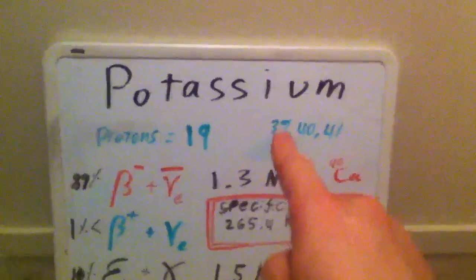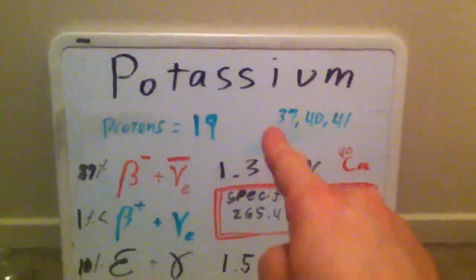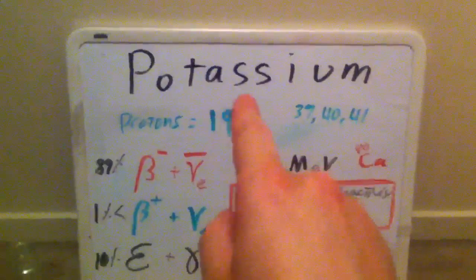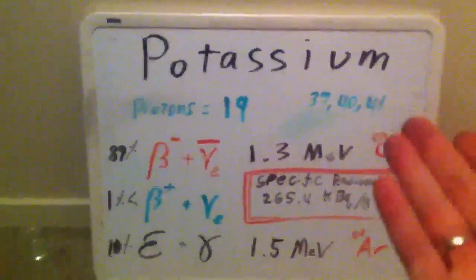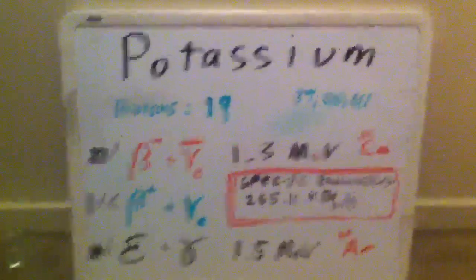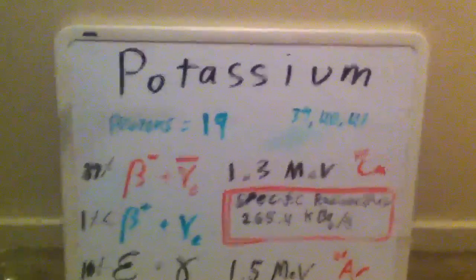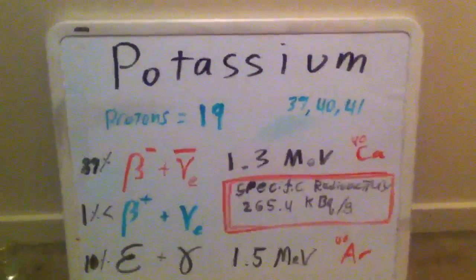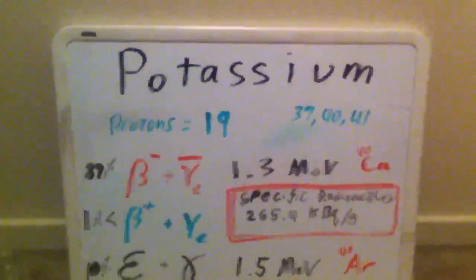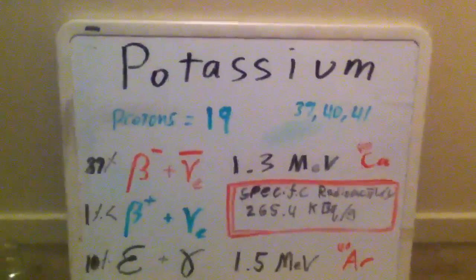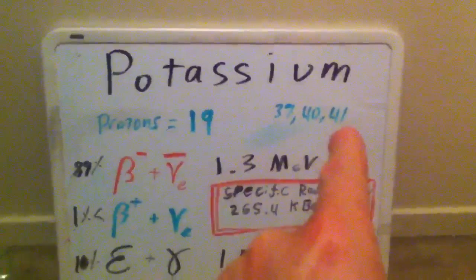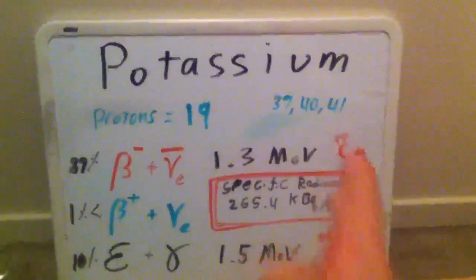So when I say potassium-39, which is the stable potassium — it's not radioactive — this number minus this number will tell you how many neutrons are available. If you add an additional neutron to potassium you get potassium-40, which has 21 neutrons. Potassium-40 is radioactive and exists in less than 1% of normal potassium. Additionally, there is one other less common but non-radioactive potassium known as potassium-41.